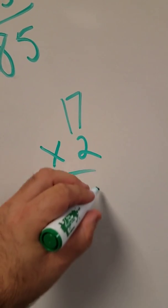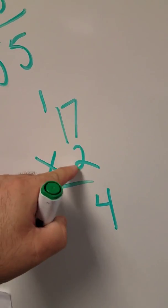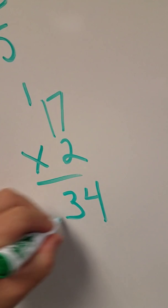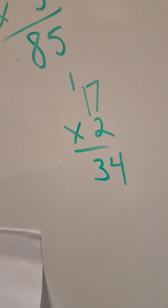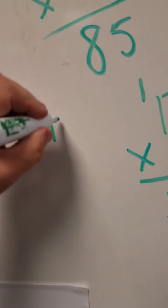7 times 2, of course, is 14. 2 times 1 is 2 plus 1 is 3. 34. All right, well, let's try, how about 3?